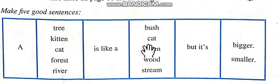Cat kitten ki tarah hoti hai magar yeh bada hoti hai. A forest is like a wood but it's bigger. Jangal lakniyo ki tarah hota hai magar yeh bada hota hai. A river is like a stream. Nadi nati ki tarah hota hai, but it is bigger. Magar yeh bada hota hai.